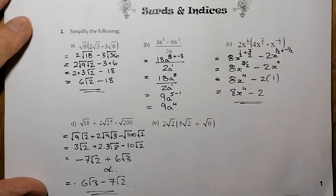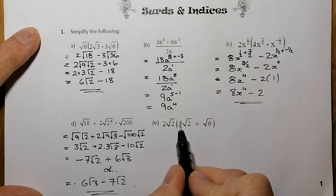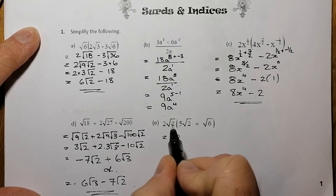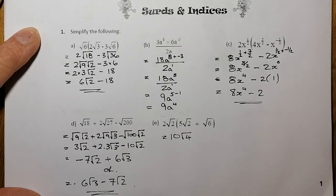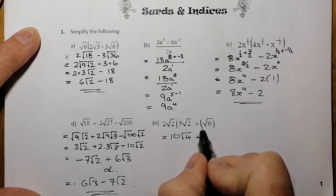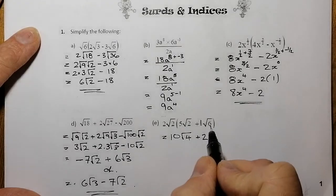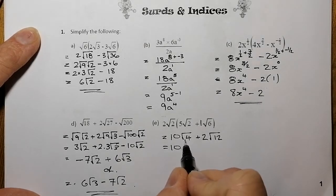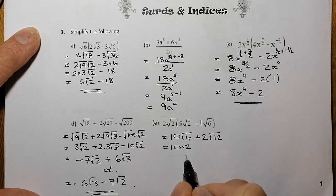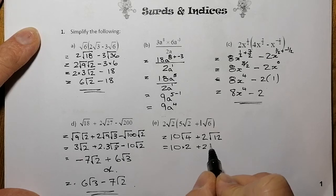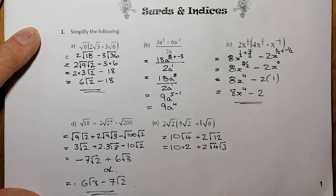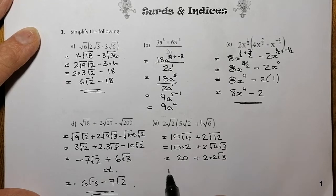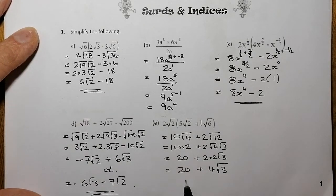Last one in this set — another multiplying out brackets question. Multiply the numbers at the front first: that gives 10. Root 2 times root 2 gives root 4. Then for the last part, 2 times 1 gives 2, and root 2 times root 6 gives root 12. Simplifying: root 4 is 2, so 10 times 2 is 20. Root 12 simplifies to root 4 times root 3, giving 2 times 2 root 3. Final answer: 20 plus 4 root 3.